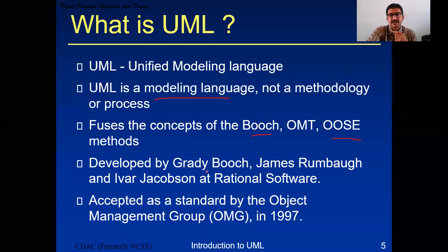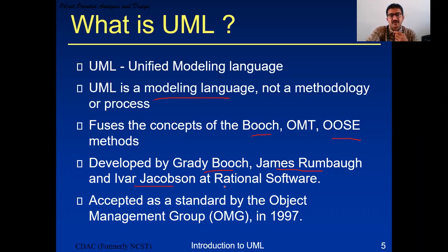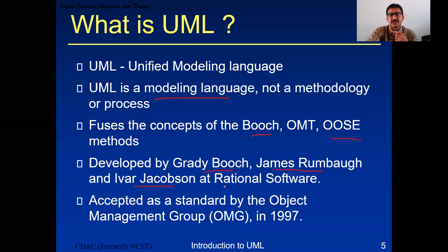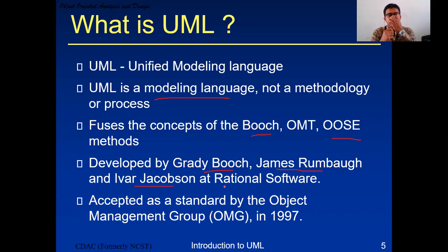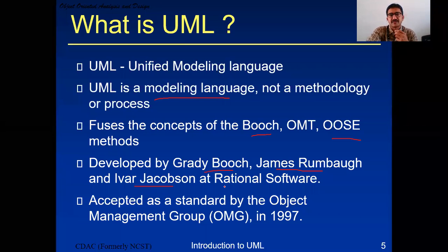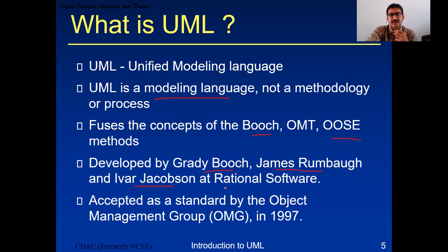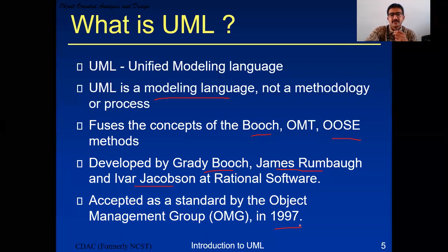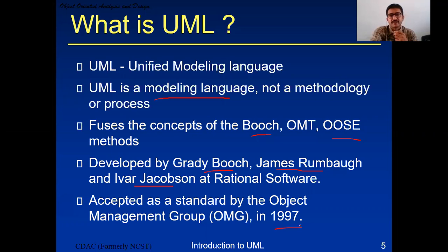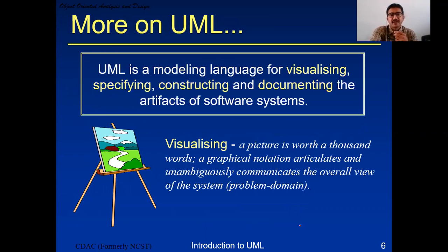Who developed UML? Grady Booch - remember the author's name - Grady Booch, James Rumbaugh, and Ivar Jacobson. They initially developed it as Rational Software. Visual Paradigm is the open-source tool we are going to use, but Rational Software is an IBM specialist paid software. UML was accepted as a standard by the Object Management Group, that is the OMG group, in the 1990s.